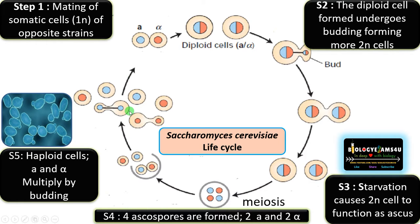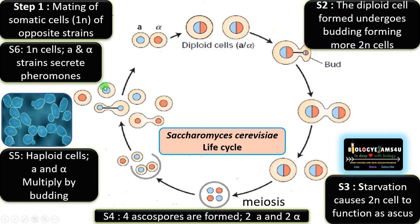Yeast can exist as either a diploid yeast cell or a haploid yeast cell. These haploid cells, A and alpha, at a later stage secrete pheromones, come in contact, fuse, and again form the diploid cell. So there is a transition of generations: diploid cells undergo meiosis forming haploid cells, whereas haploid cells fuse to form the diploid cell.